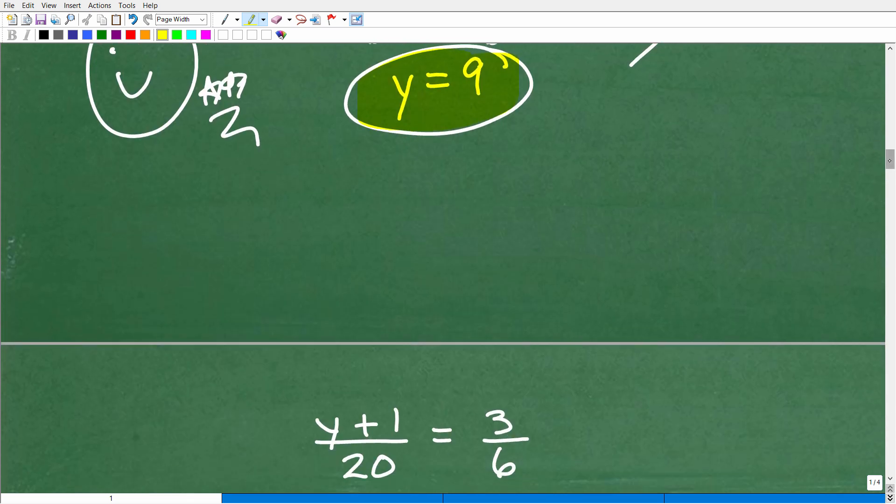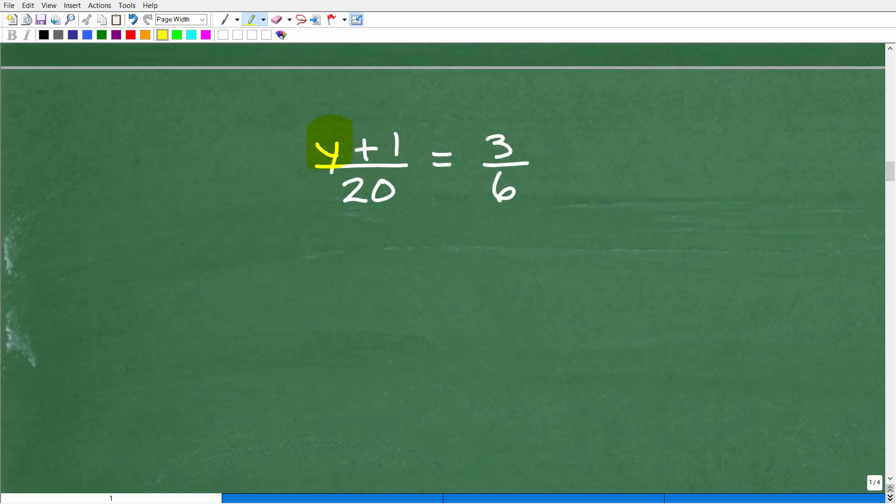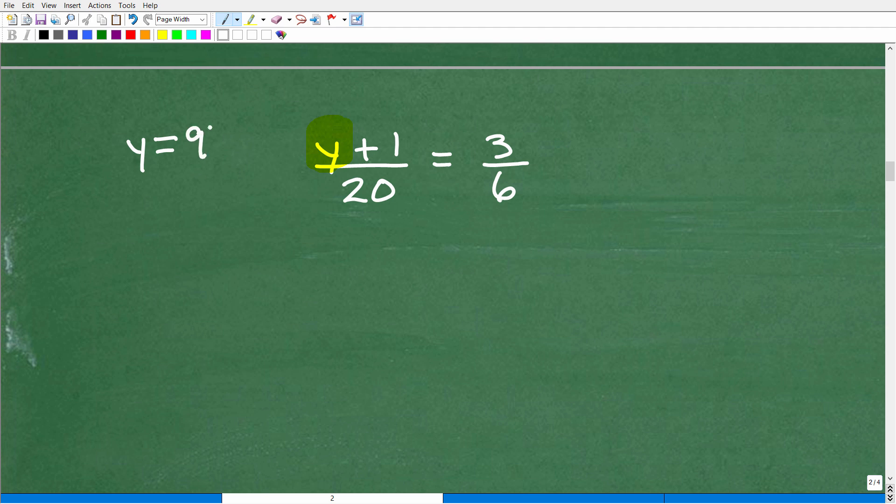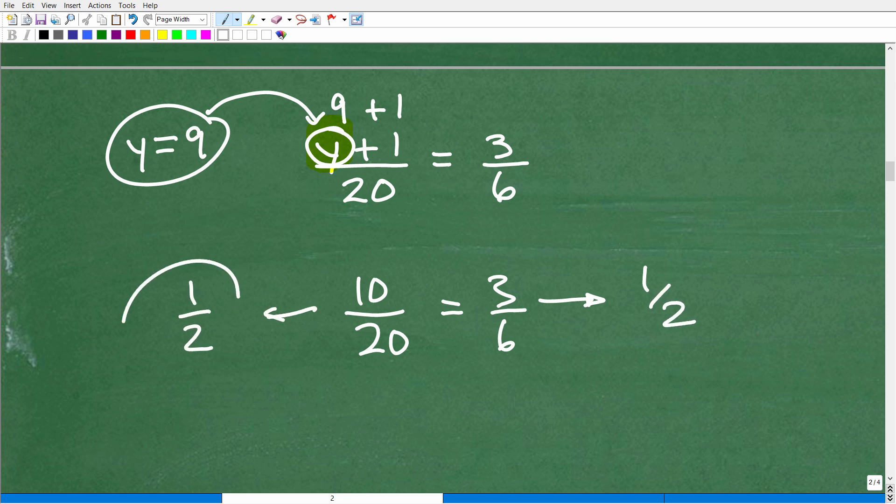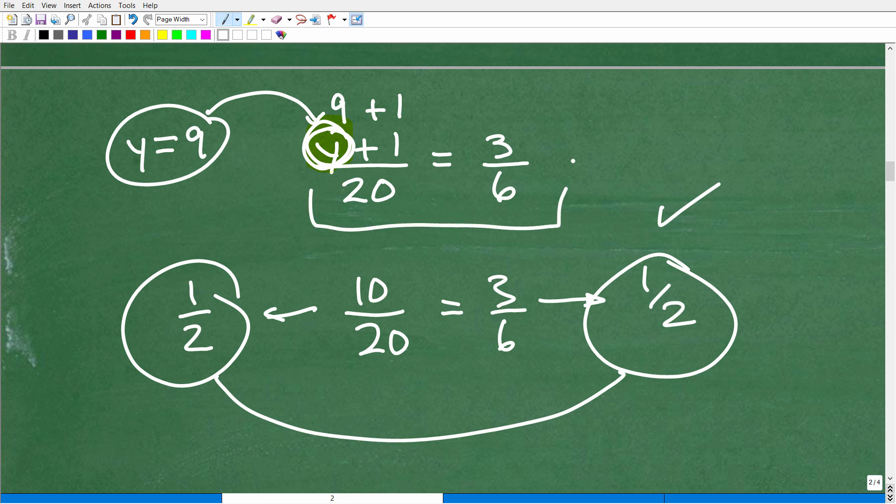Okay, so if Y is equal to 9, let's go down here. Here's our proportion. So if Y is equal to 9, if I plug in for Y, 9, what would I get? Well, I would get 9 plus 1, which last time I checked is 10. So it would be 10 over 20. Is that the same as 3 over 6? It is. Because 3 over 6 is the fraction 1 half. And 10 over 20, I can reduce that to the fraction 1 half. 1 half is equal to 1 half. And by definition, that is a proportion. And Y equals 9 is the solution for Y to make this a true statement.